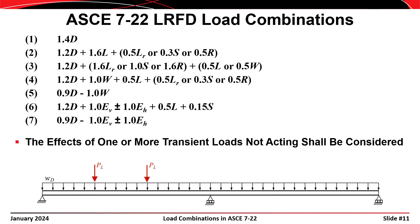Additionally, considering only the two live loads in the first span might result in a negative moment in the second span. Similarly, designing for just the two loads in the second span leads to a larger positive moment in the second span than all four live loads acting together, and might result in negative moment in the first span. The takeaway is that you have to consider different permutations of transient and environmental loads — sometimes the case where some or all transient loads are not acting is the critical case.